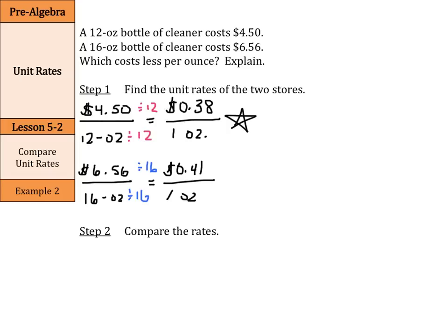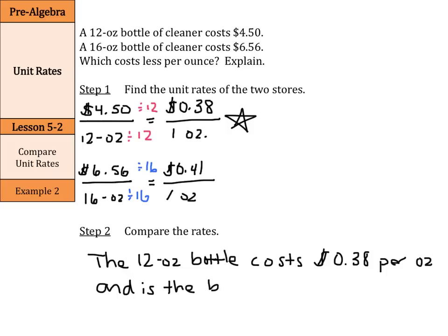So, compare the rates. The 12-ounce bottle costs $0.38 per ounce and is the better buy, at least in price per ounce. So, let's continue.